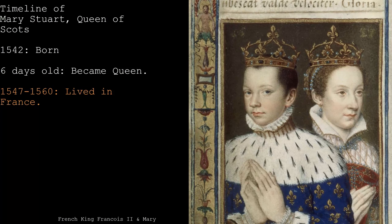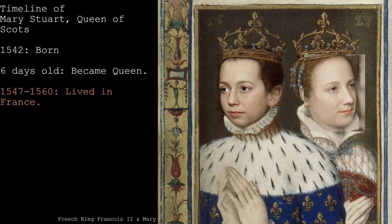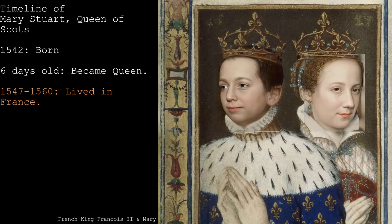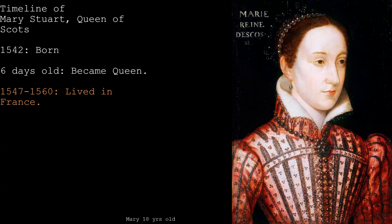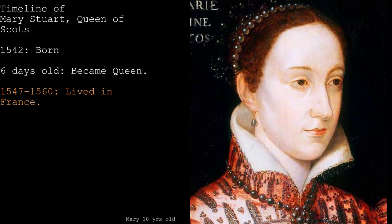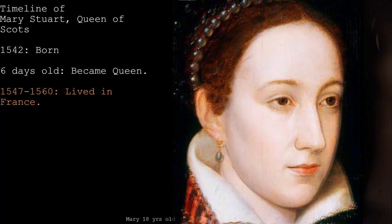England had just had its Protestant Reformation, and Scotland was having its own version too. Mary had her whole childhood in the safety of France. When she was 15, she married the Dauphin and became Queen Consort of France. She had a small oval head, a long neck, brown hair and eyes, arched brows, pale skin, and a high forehead. She was also 5'11", which was attractively tall, and had a charisma that drew people to her.